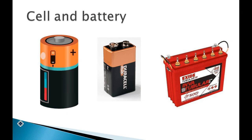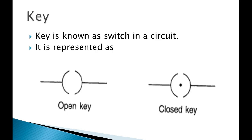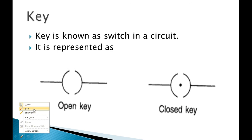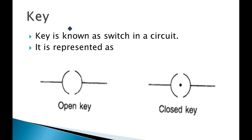Now we need to learn about the circuit. We have covered: cell, battery, current, charges, positive and negative terminals. The next term is a key — a key is a kind of switch. Like in your house you have a switch to turn the light on or off.